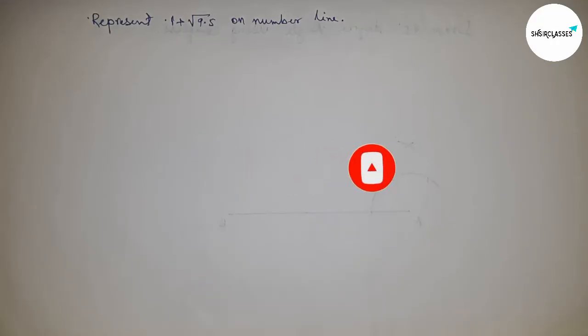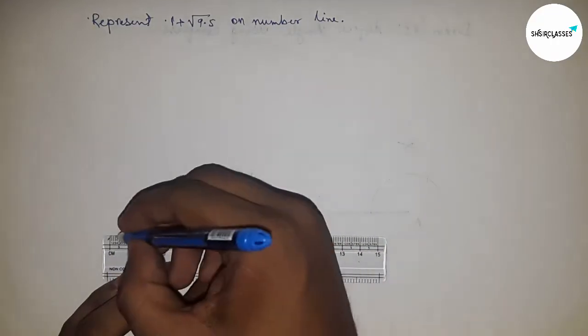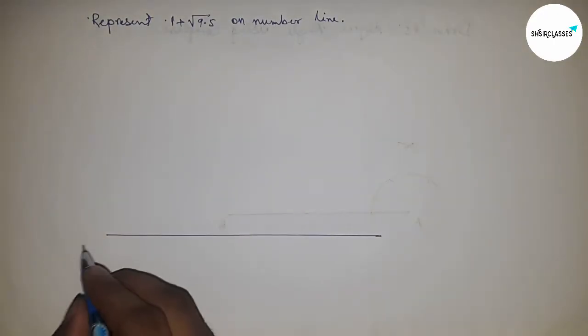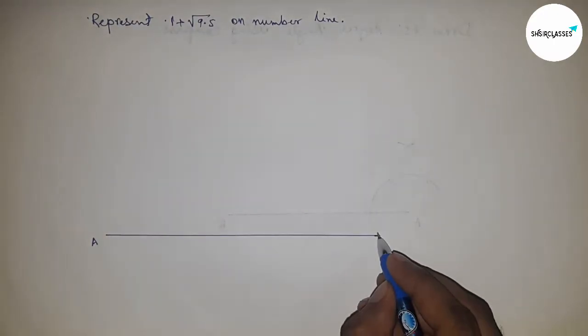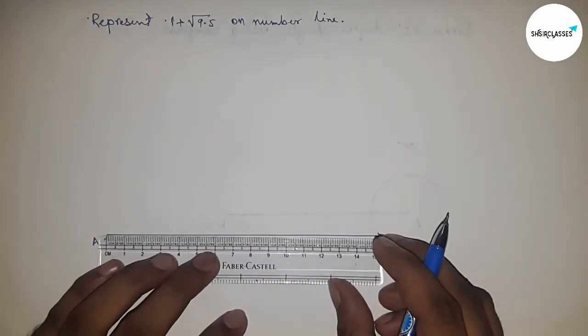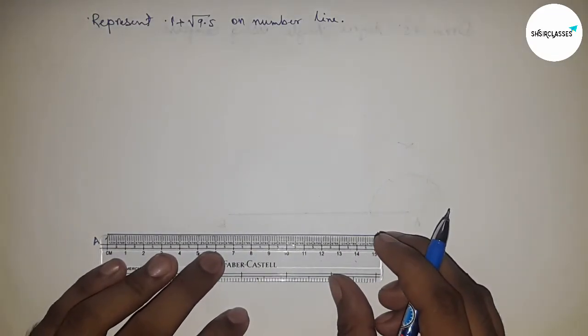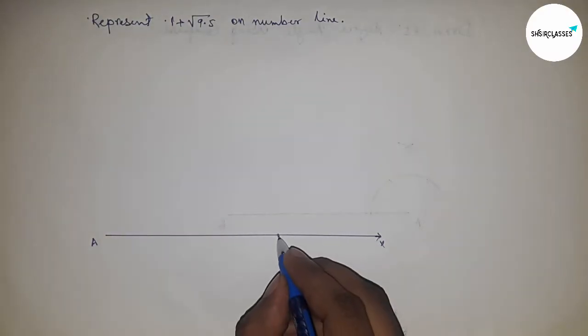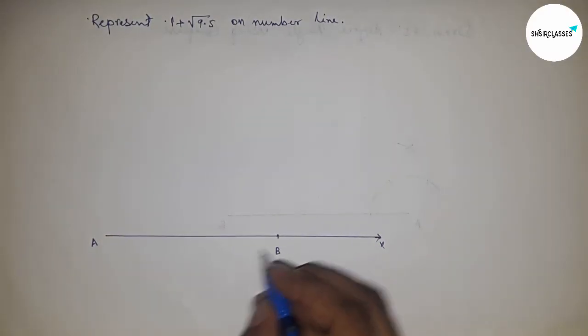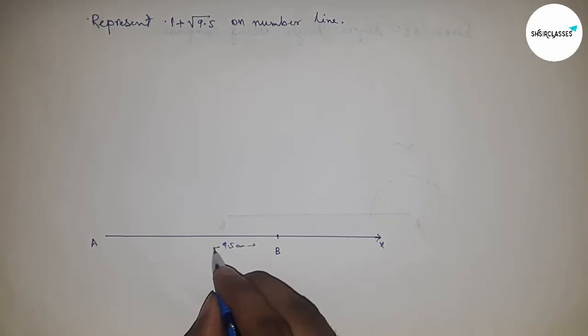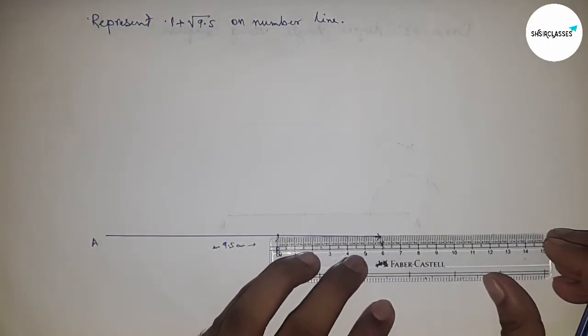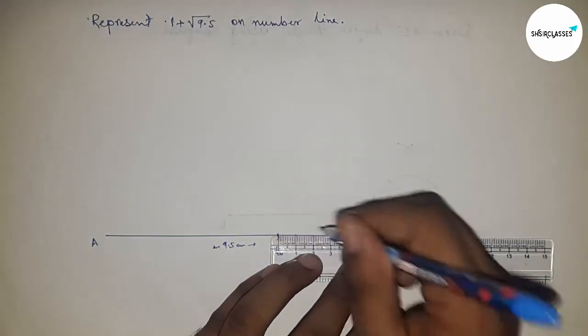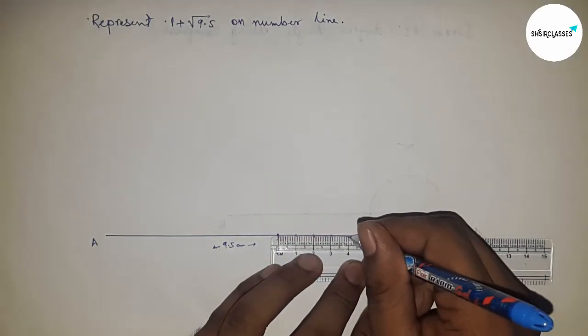First of all, draw a line of any length. This is the AX line. Next, take a length of 9.5 centimeters by scale. So first we construct root 9.5, then add 1 to it, and we get our answer.